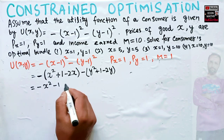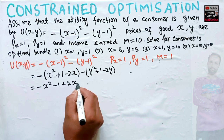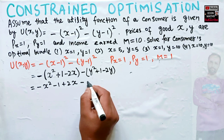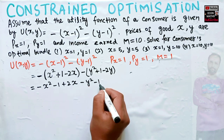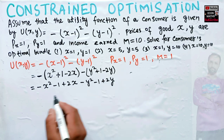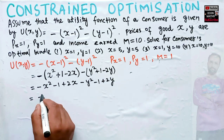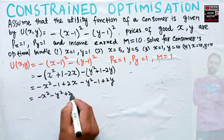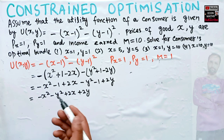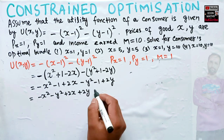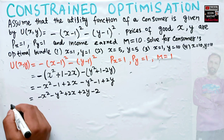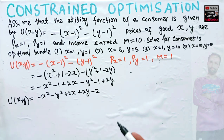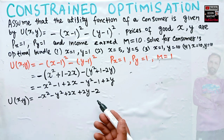Multiplying through by the minus sign: minus x squared minus 1 plus 2x, and similarly minus y squared minus 1 plus 2y. Combining and rewriting: u(x,y) = minus x squared minus y squared plus 2x plus 2y minus 2, since minus 1 minus 1 = minus 2. This is our simplified utility function, which we need to maximize.